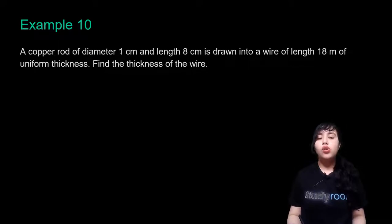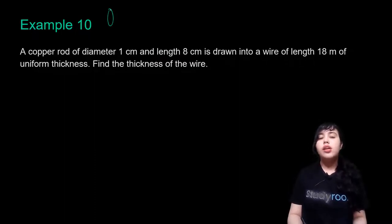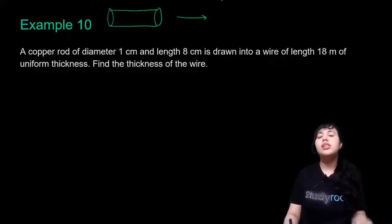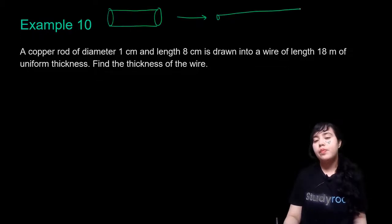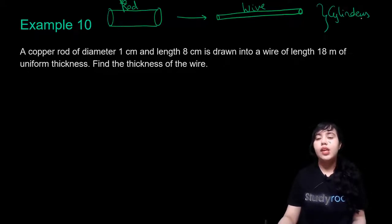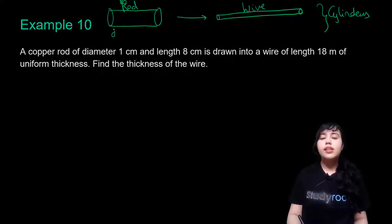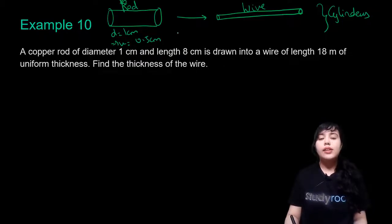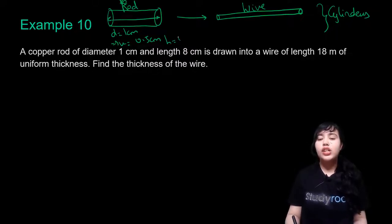We've been given a copper rod of diameter 1 cm and length 8 cm, which is drawn into a wire. The rod has a greater diameter than the wire, which is very thin. Both rod and wire are cylinders. The rod has radius = 0.5 cm and height h = 8 cm.